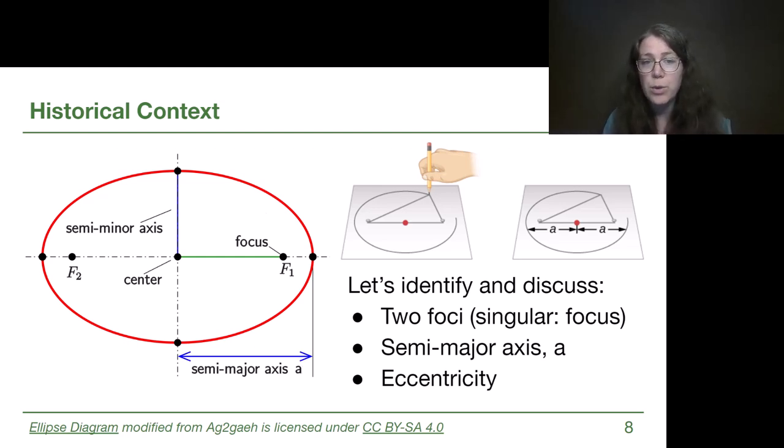The pins in the pin board, or f1 and f2 in the diagram on the left, are the focus points. So more than one focus, the plural is foci, so we do want to be able to recognize that. So an ellipse has two foci instead of one single important center.